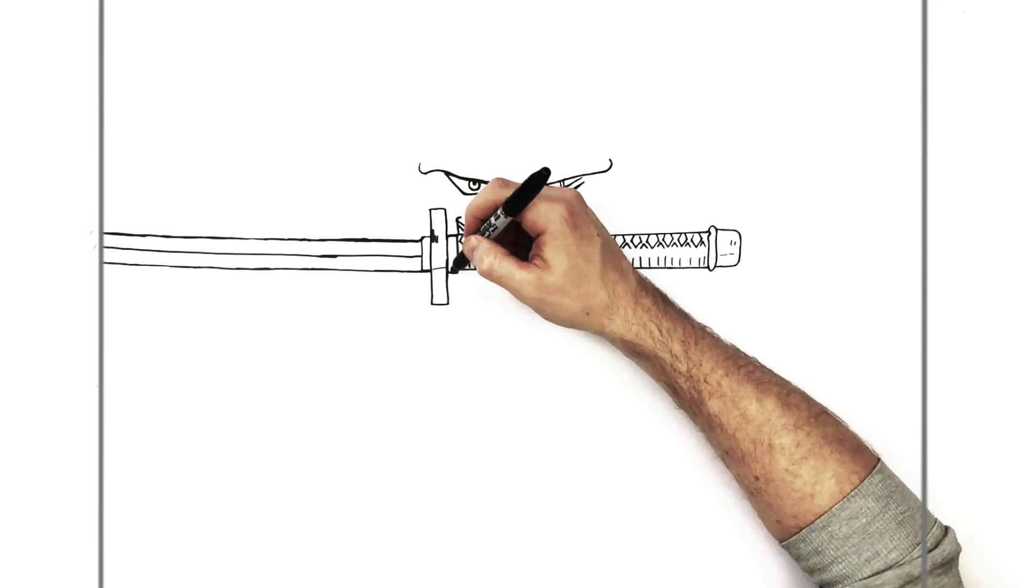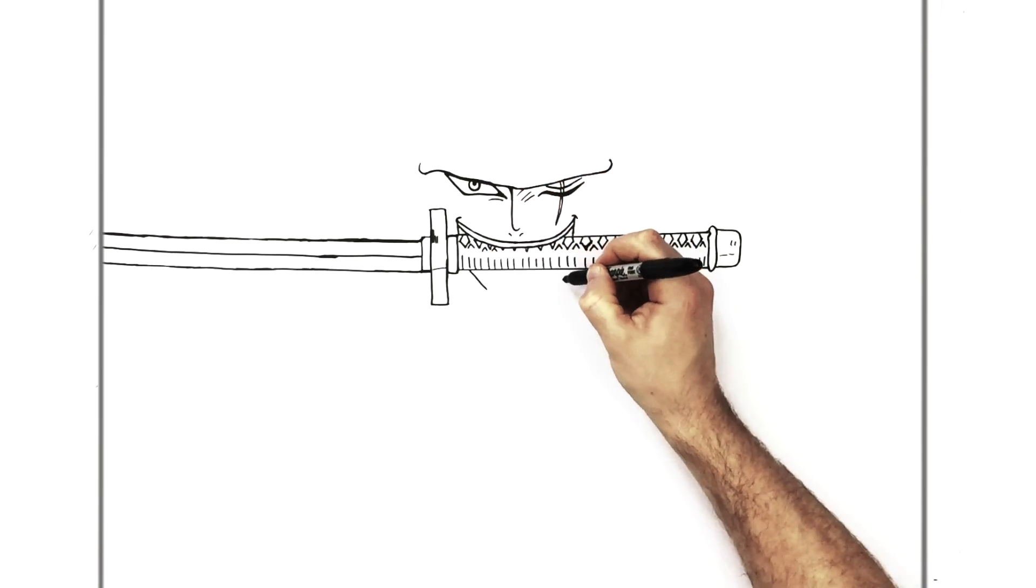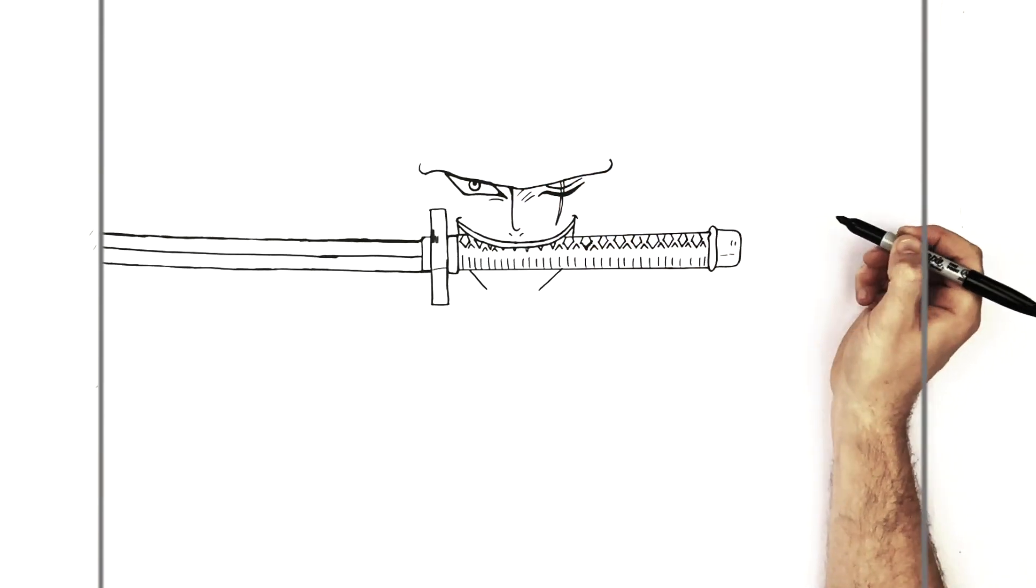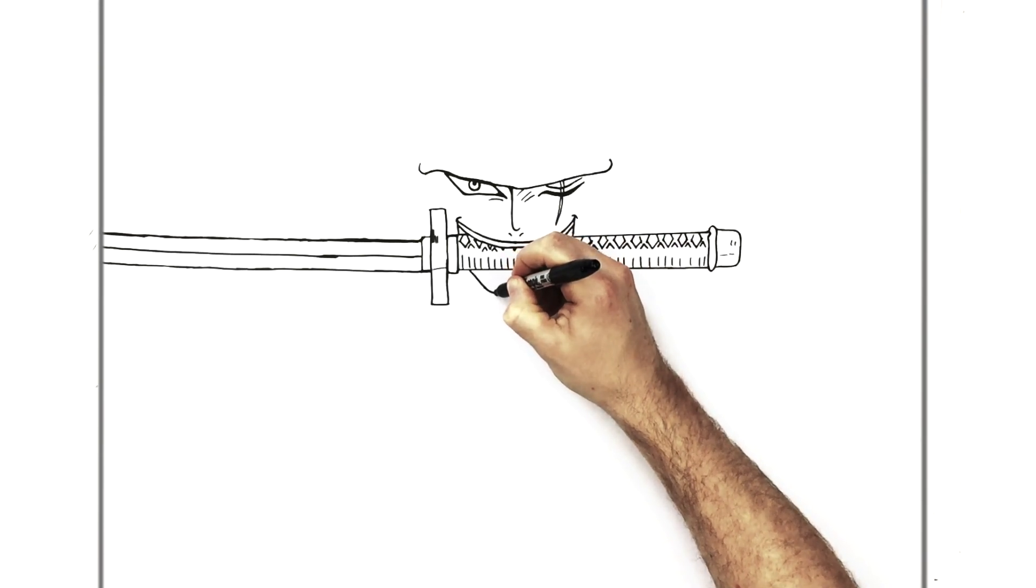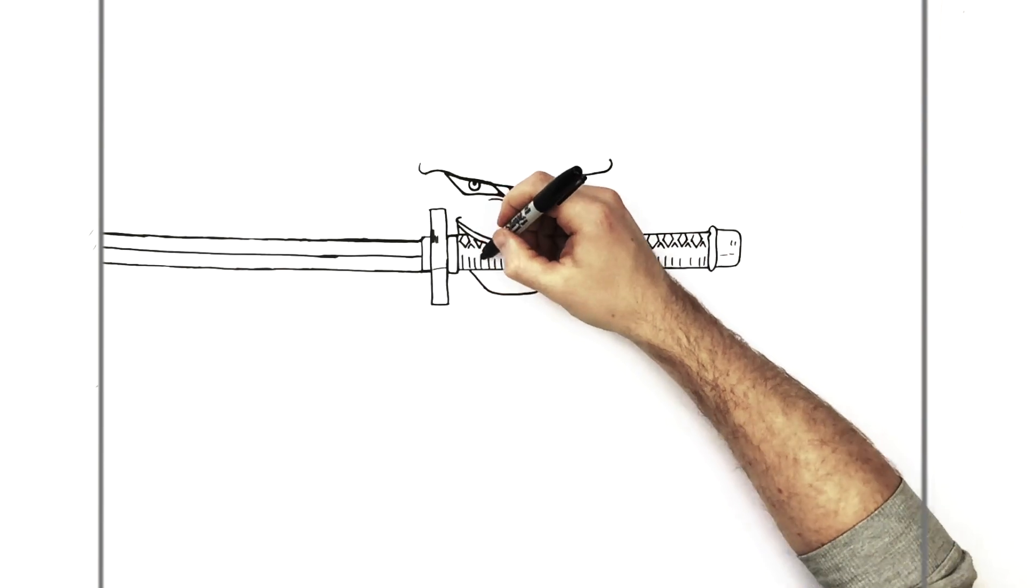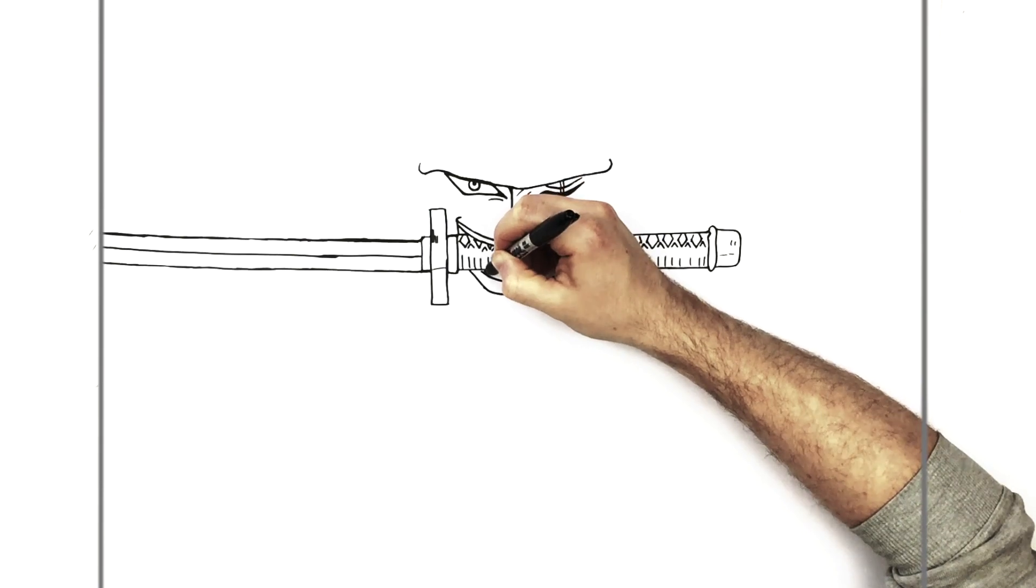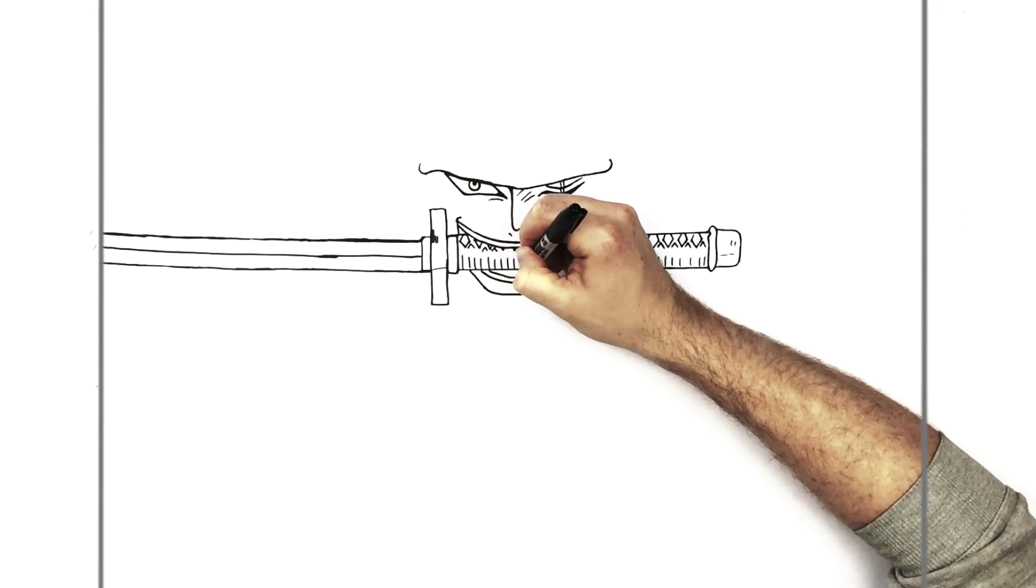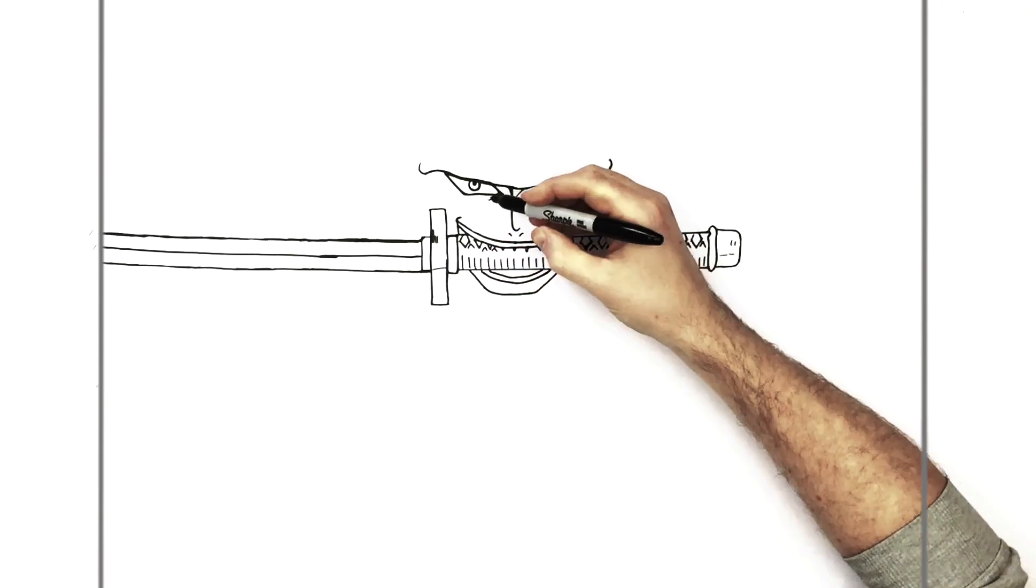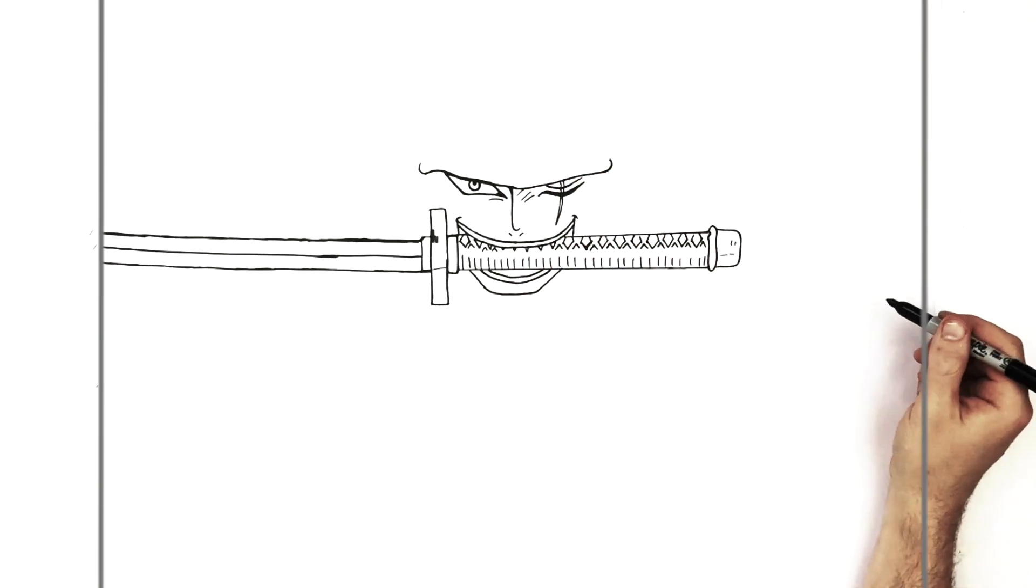So then his chin comes out from underneath the handle here. Comes out here. And then we bring it around. Real square chin. And then we can see his bottom lip and his teeth. So bottom lip line just curves around like so. And then his tooth and teeth just here.